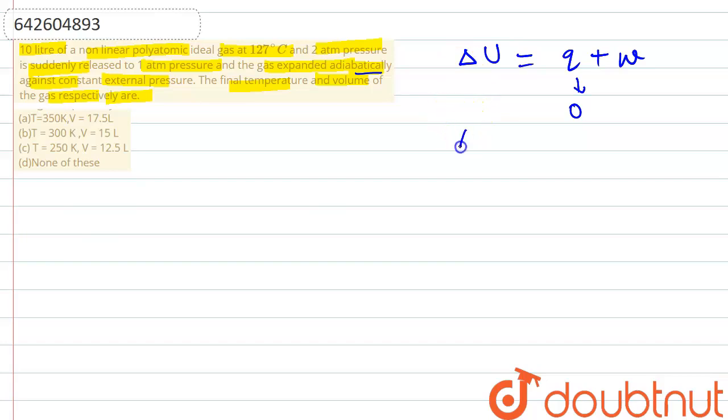Now for the adiabatic expansion here, we will be using the expression that delta U is equal to w. This can be written as n into number of moles times gas constant divided by gamma minus 1, T2 minus T1, is equal to minus P external times V2 minus V1.